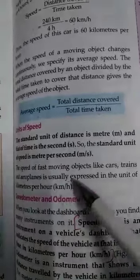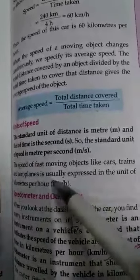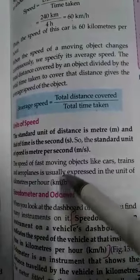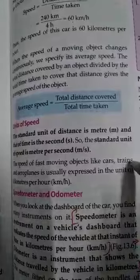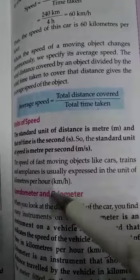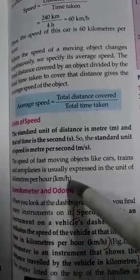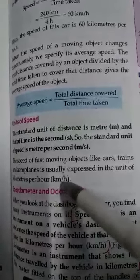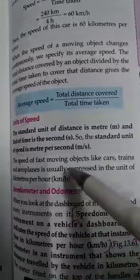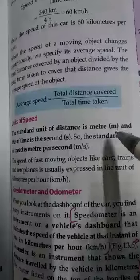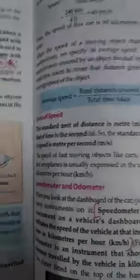The speed of fast moving objects like cars, trains and aeroplanes is usually expressed in the unit of kilometer per hour. Jo tez chalne wale hain, car hai, train hai, aeroplane hai, unko hum jo speed express karte hain, woh kilometer per hour se karte hain, kyunki woh kitne kilometer gaye, kitne hours mein. Aur jab hum koi chhoti cheez hoti hai, koi aapki cycle wagaira hai, to woh aap usko meter per second mein bhi kar sakti hai.